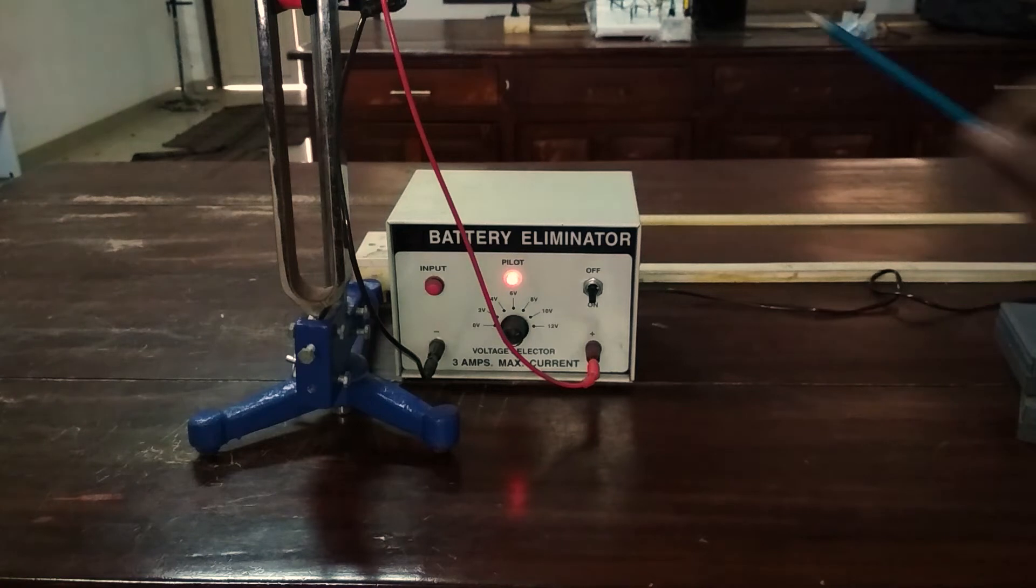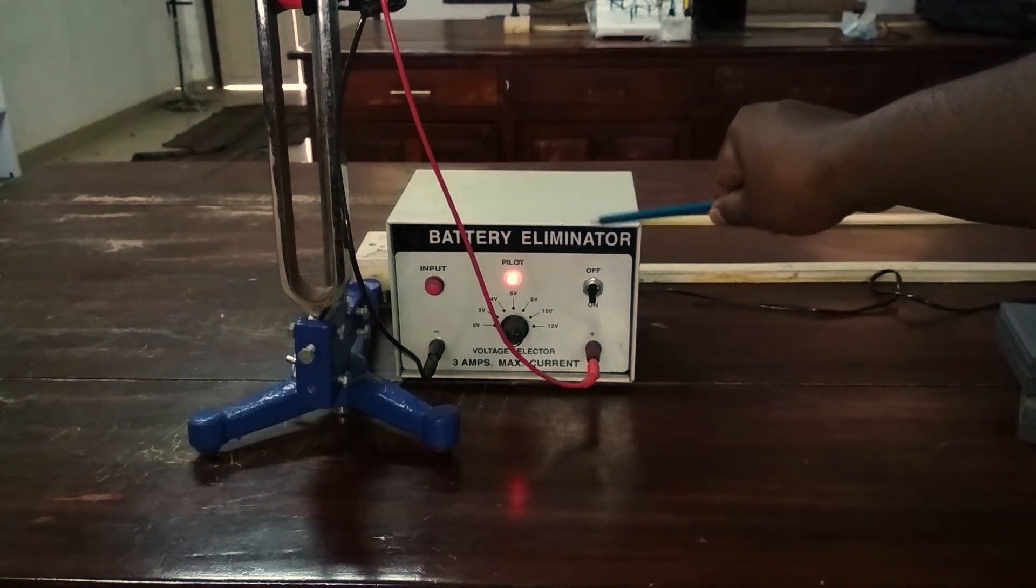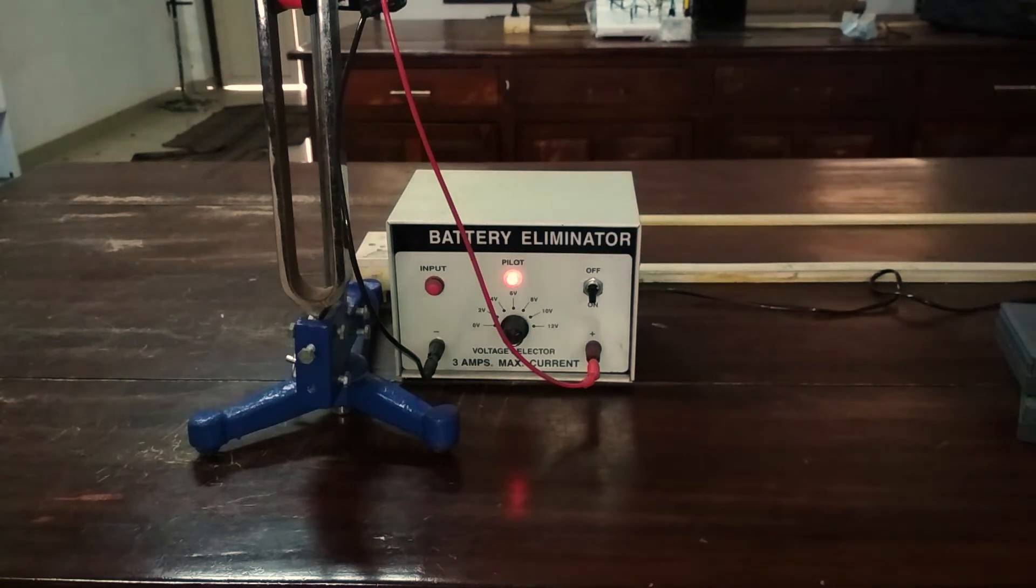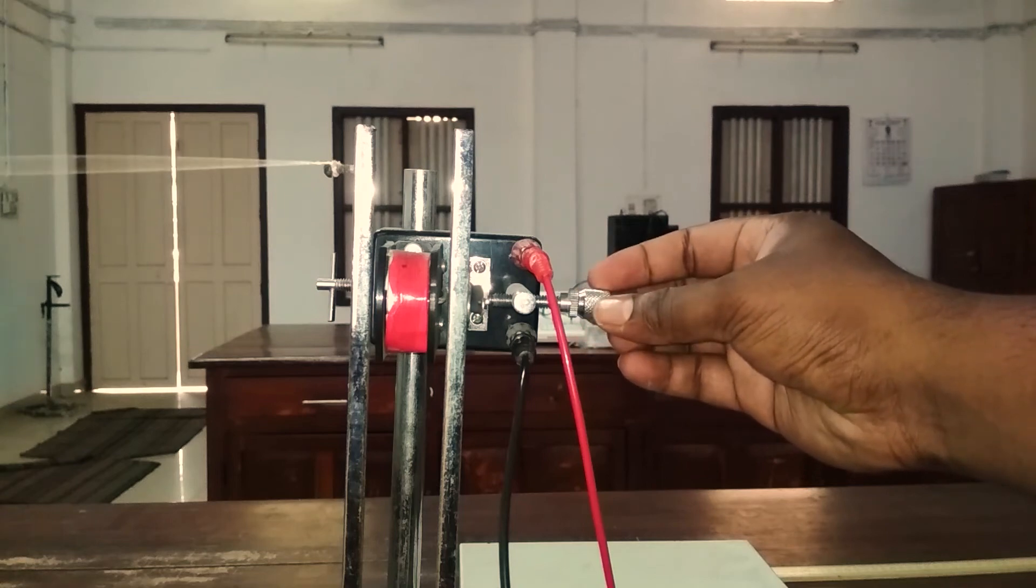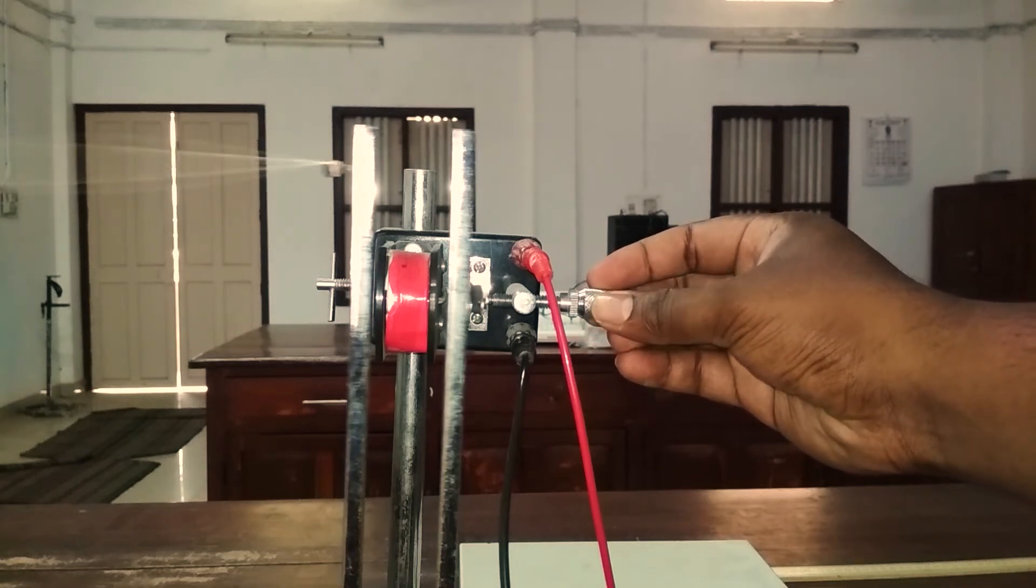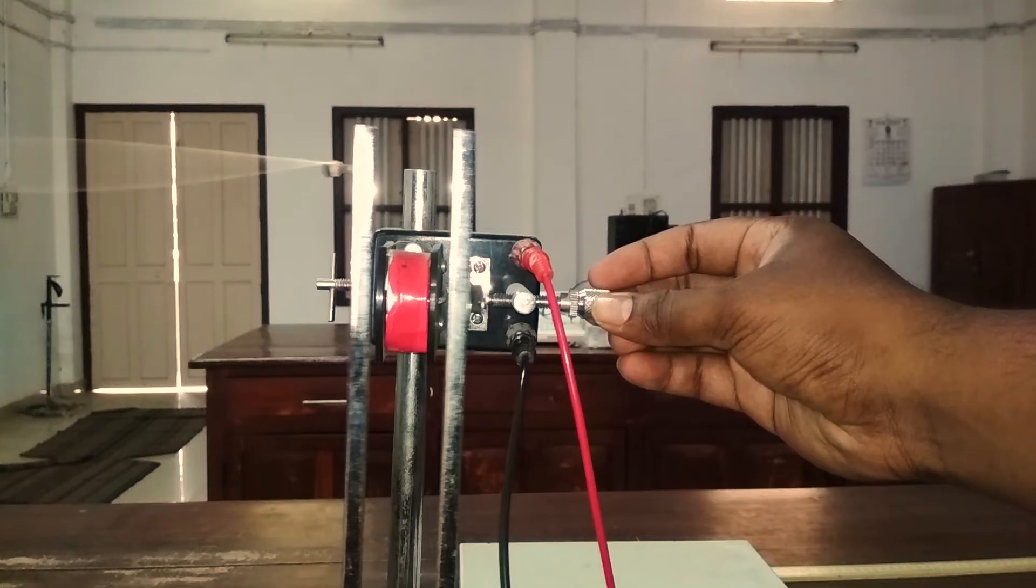Switch on the power supply and adjust the screw connected to the electromagnet to excite the tuning fork. The tuning fork starts to vibrate. Adjust the position of the pulley so that the string is set into resonant vibrations and well-defined loops are obtained.